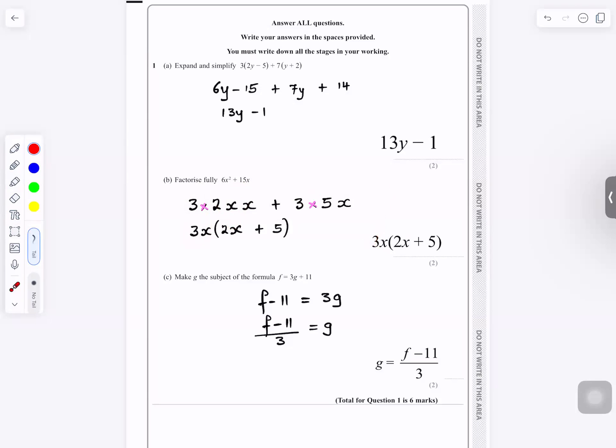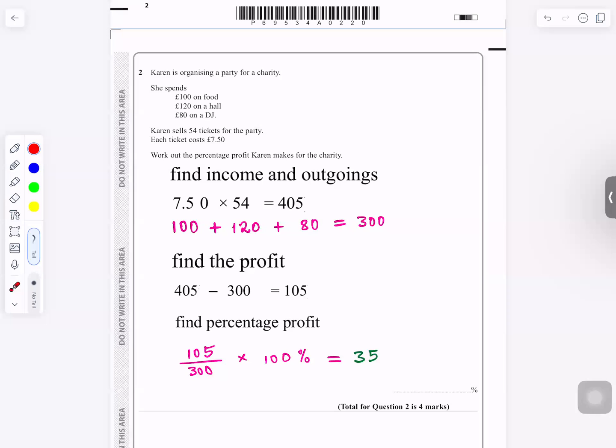Part c: make g the subject of the formula. You subtract 11 from both sides. f minus 11 is equal to 3g, and then you divide by 3. So f minus 11 over 3, that's the answer.